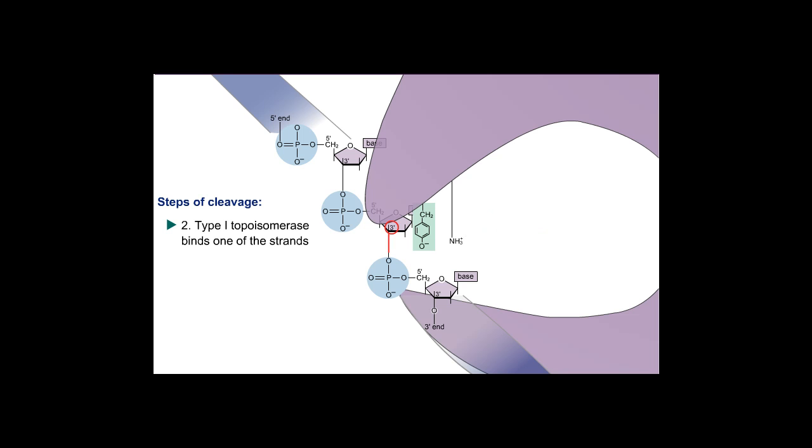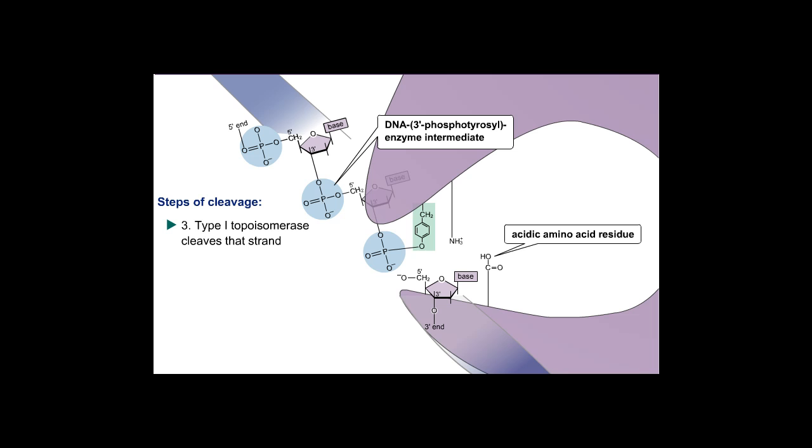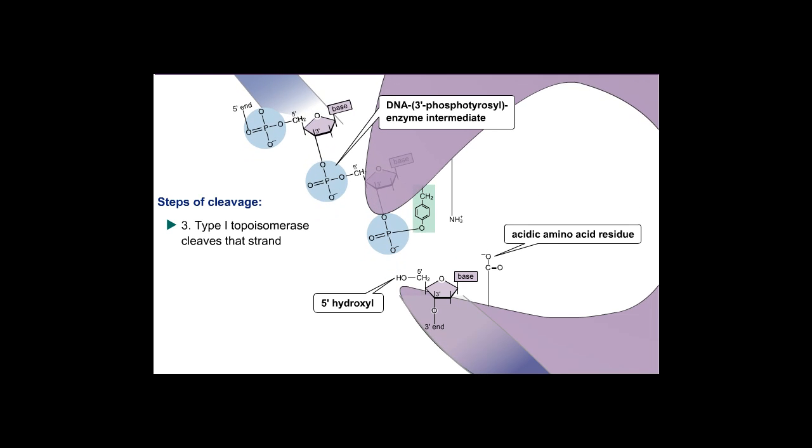The oxyanion attacks the phosphate group at the 3' position of the nearest deoxyribose, producing a DNA 3' phosphotyrosyl enzyme intermediate and a 5' hydroxyl polynucleotide. The hydrogen atom on the 5' hydroxyl is probably donated by a nearby acidic amino acid residue.